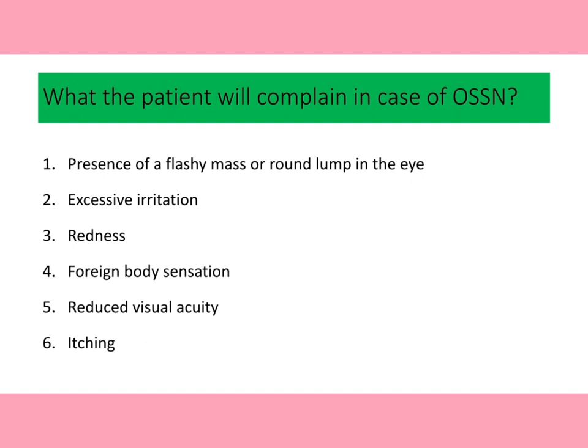When a patient presents to your clinic with OSSN, they will typically report a fleshy mass over the eye — which could be pterygium, pinguecula, OSSN, or something else. Other symptoms include excessive irritation, redness, foreign body sensation, reduced visual acuity due to unwanted astigmatism when the lesion is over the cornea, and itching.